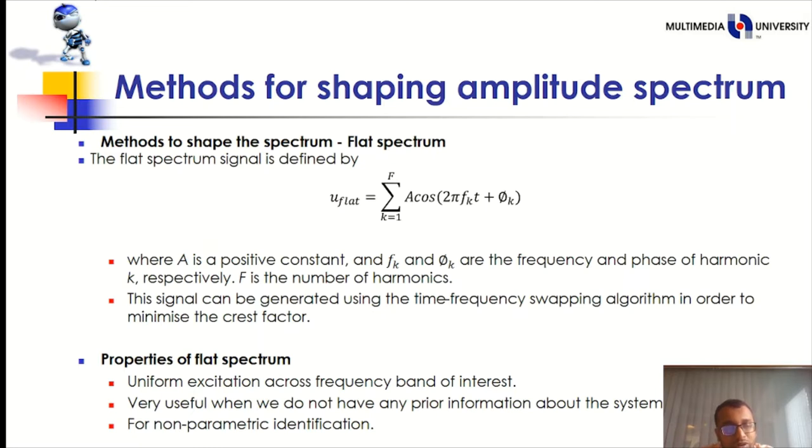The method for shaping amplitude spectrum. In this equation, the equation represents the flat spectrum. Where A is a positive constant and Fk and Phi k are the frequency and phase of harmonic K. Respectively, F is the number of harmonics. The signal can be generated using the time frequency-swapping algorithm in order to minimize the crest factor.